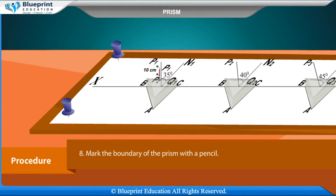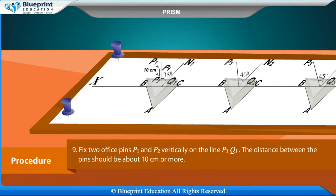Mark the boundary of the prism with the pencil. Fix two office pins p1 and p2 vertically on the line. The distance between the pins should be about 10 cm or more.